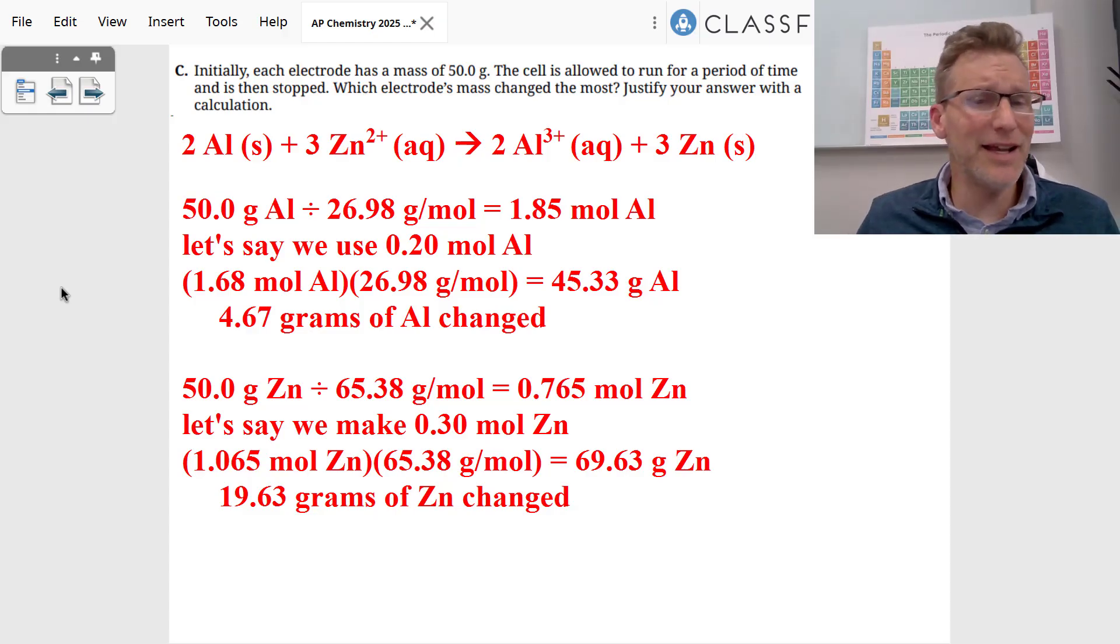And then I said, let's say it reacts for a little bit of time, and so let's say we use 0.2 moles of the aluminum. We made 0.3 moles of the zinc. That's our molar ratio right there, which means I then...